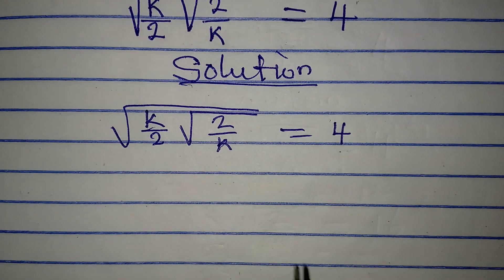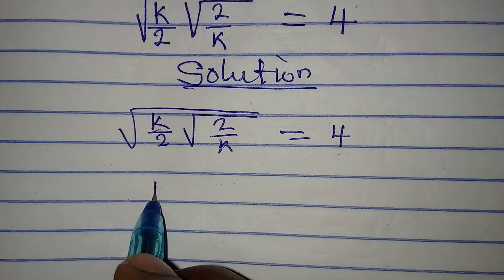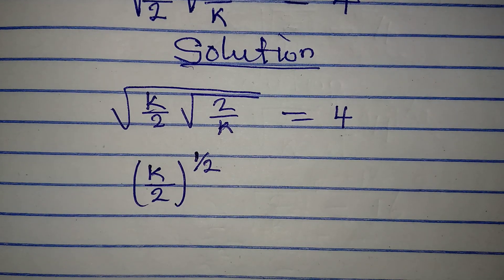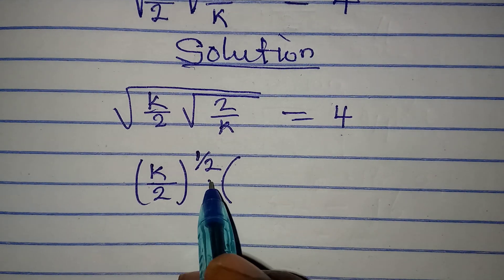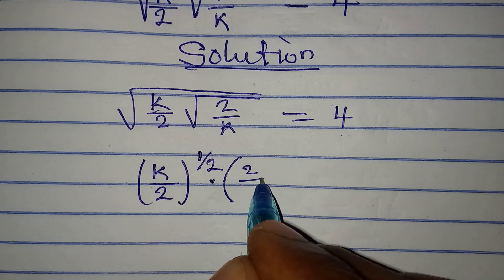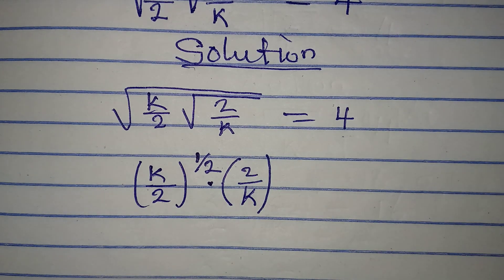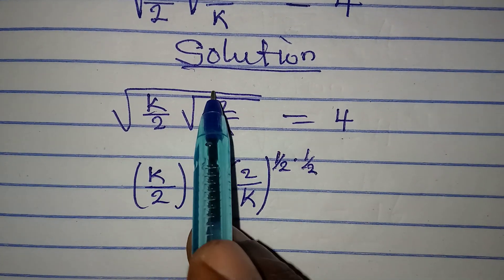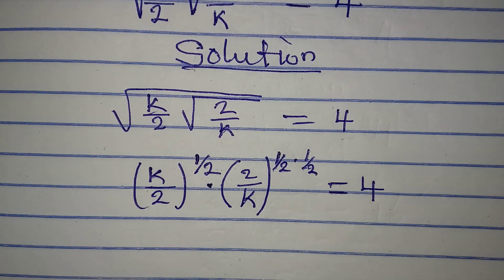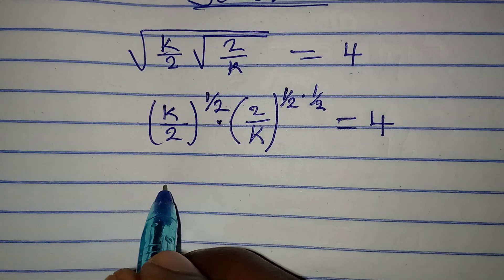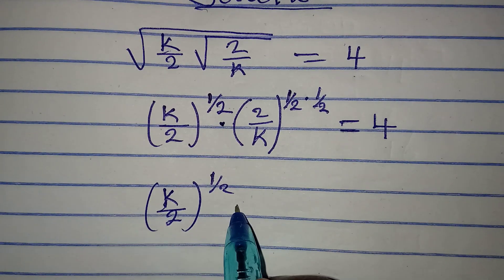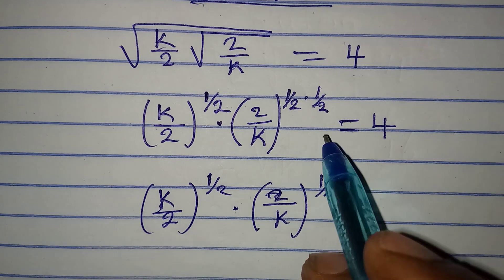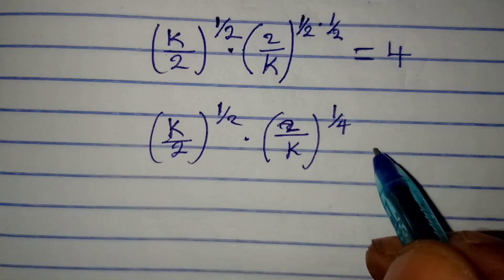Now, this is how I want to deal with this. We have k over 2, that is k over 2 to the power of 1 over 2. Remember, any number to the power of half is the square root of that. This is going to multiply 2 over k, but this 2 over k is under 2 square root signs. So that means I'm having 1 over 2 times 1 over 2 because of the 2 square root signs there, and the whole of this is equal to 4. Taking a step forward, we have k over 2 to the power of 1 over 2, multiplied by 2 over k to the power of 1 over 4, and this will be equal to 4.